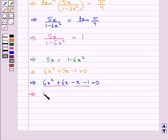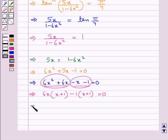Now taking 6x from these two terms we get inside the bracket x plus 1, and we take minus 1 common from these two terms. So minus 1 into x plus 1, this is equal to 0, or you can say we have x plus 1 into 6x minus 1 is equal to 0.